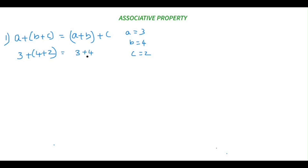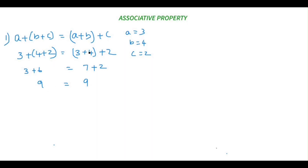Whatever is inside the bracket we will do first. So on the left side, 4 plus 2 is 6, giving us 3 plus 6. On the right side, 3 plus 4 is 7, giving us 7 plus 2. So 3 plus 6 is 9 and 7 plus 2 is also 9. Both the left-hand side and the right-hand side give 9, so associative property holds good for addition.